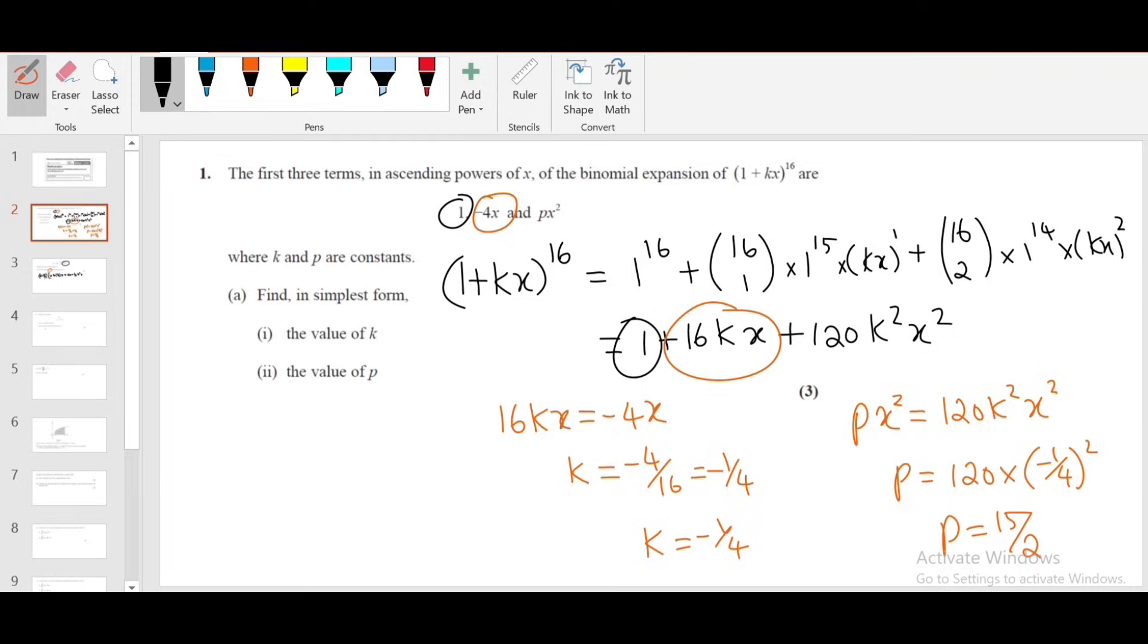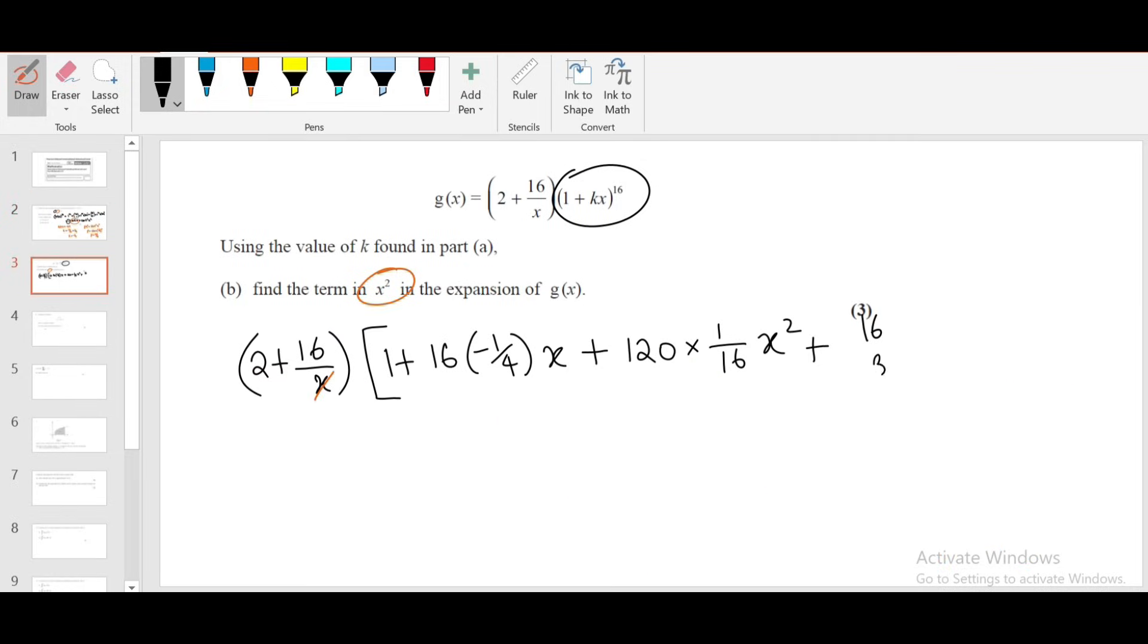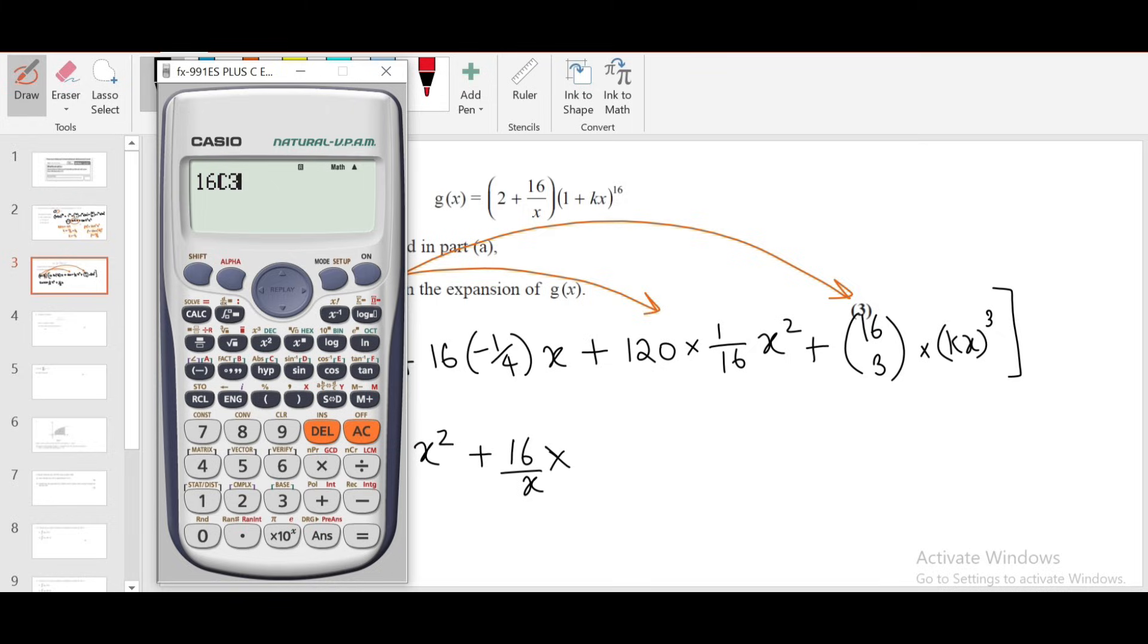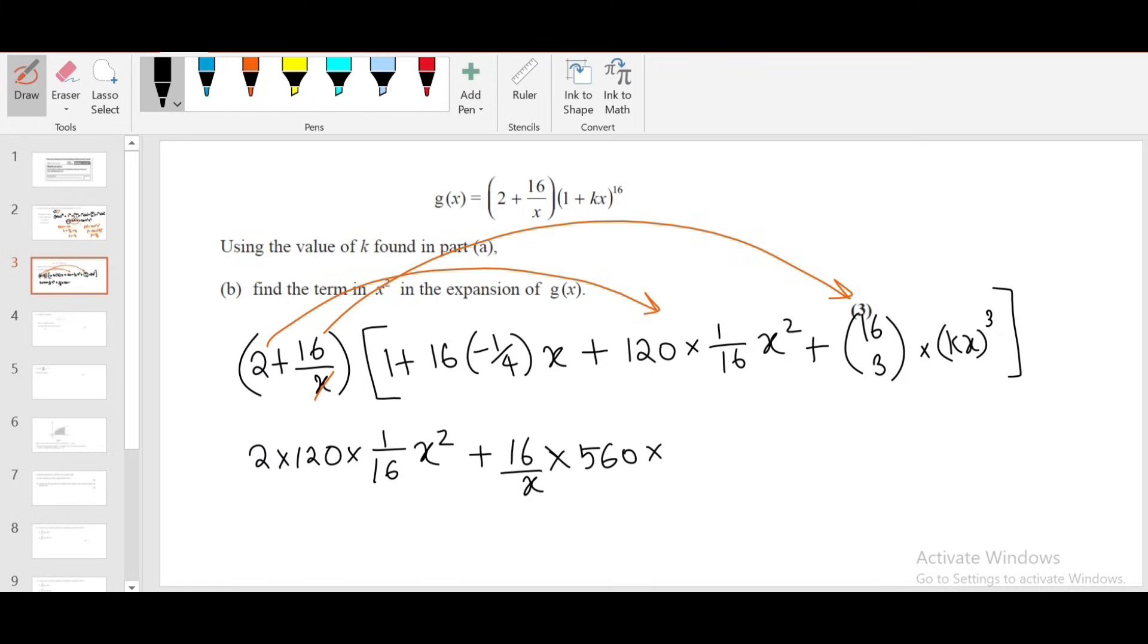That term is the fourth term: 16C3·(kx)³. We haven't calculated this in part A, but when we multiply (16/x) by this, that will give x². So to find the term in x², I multiply 2 × 120k²x² plus (16/x) × 16C3·k³x³. 16C3 is 560, and k = -1/4.